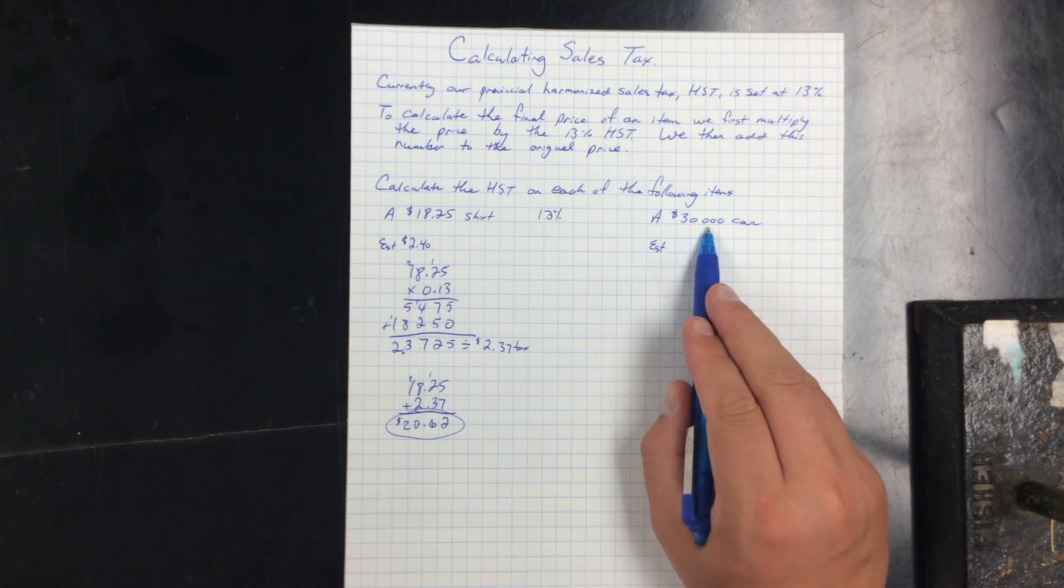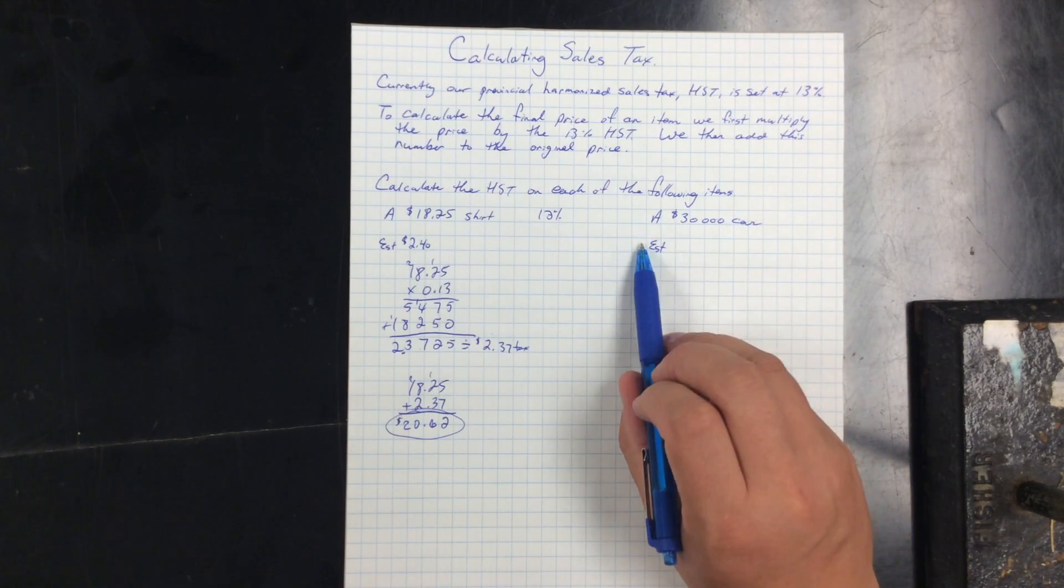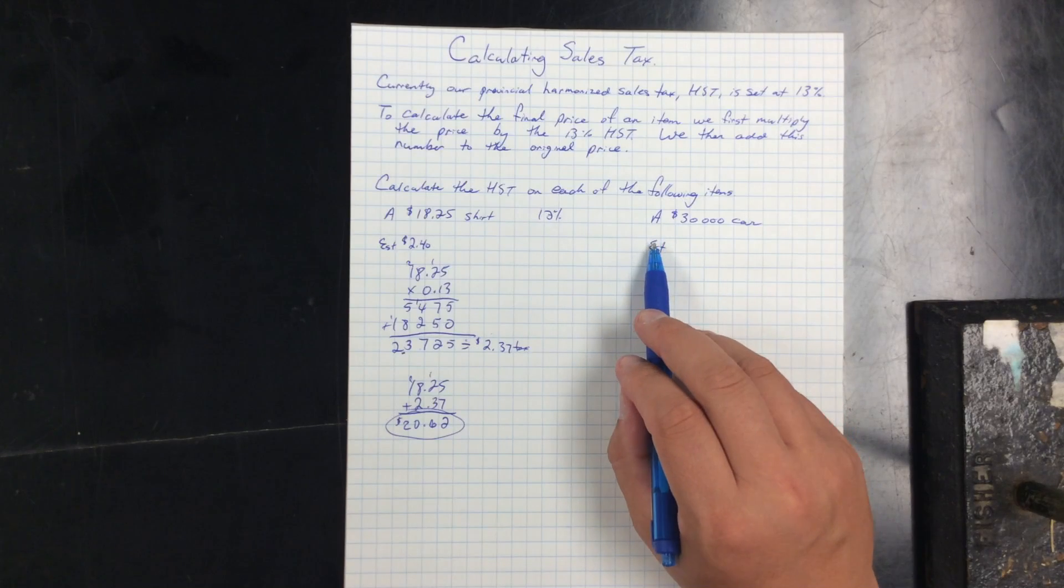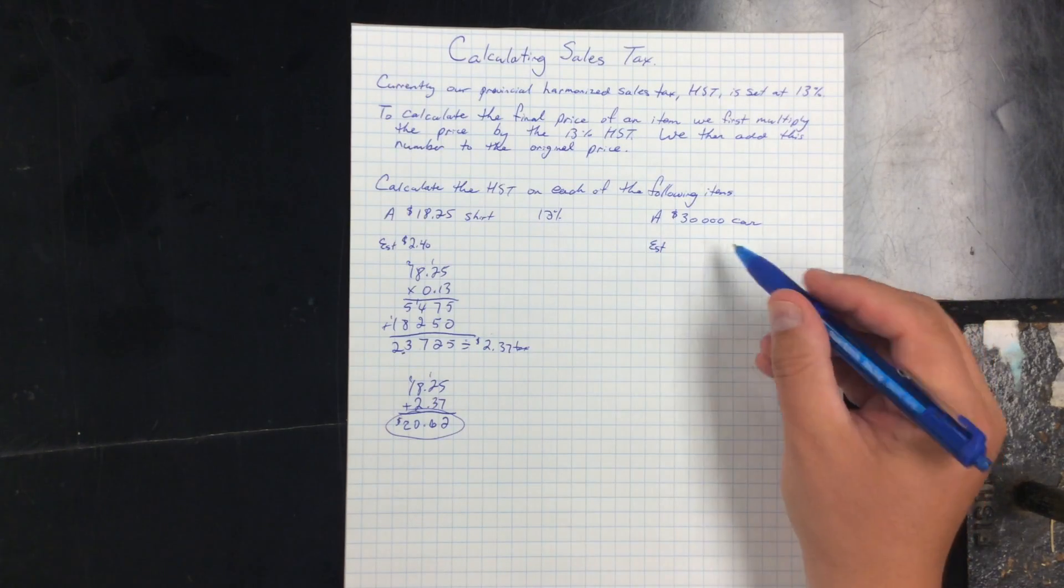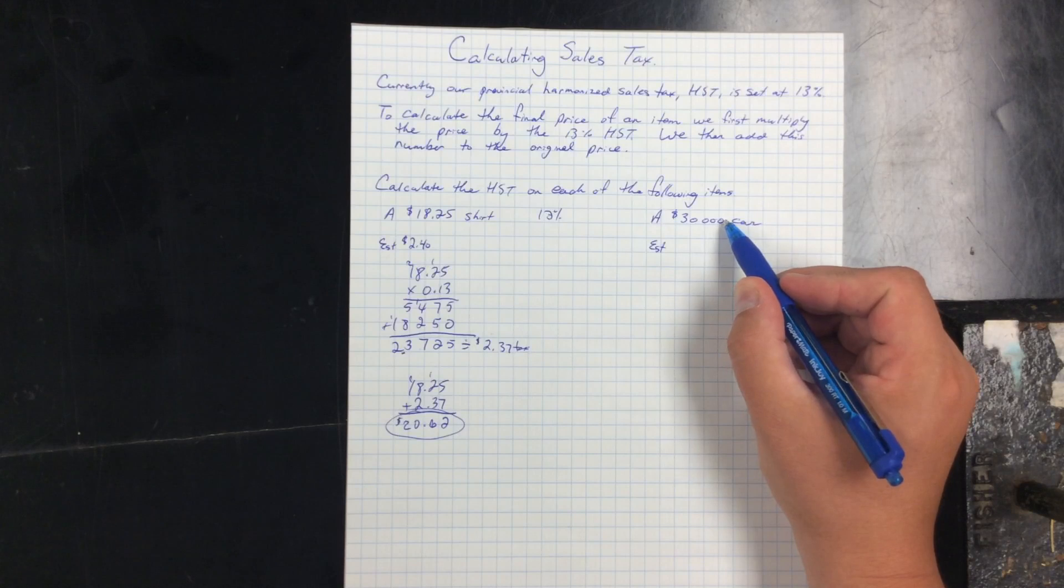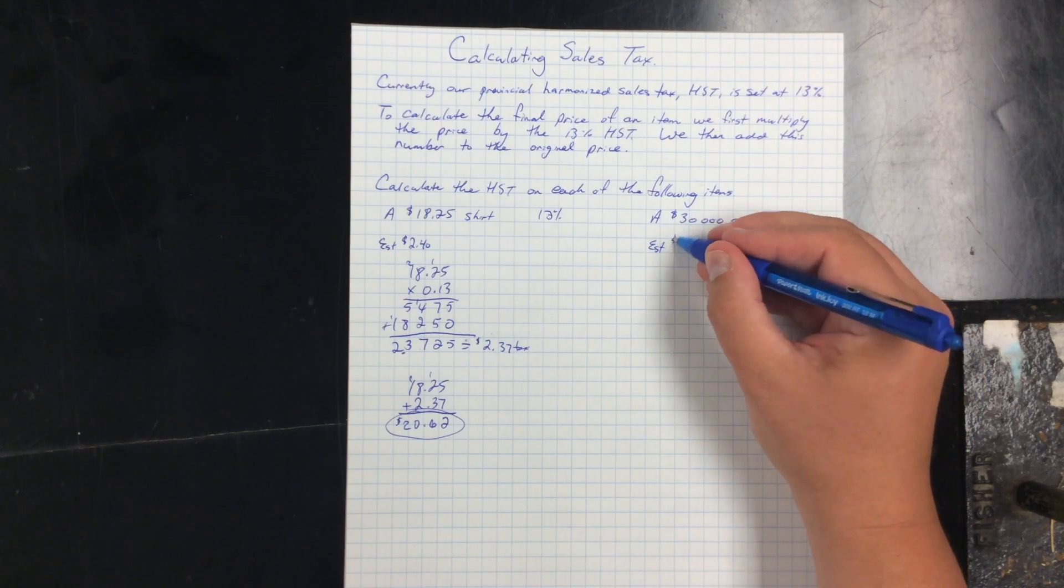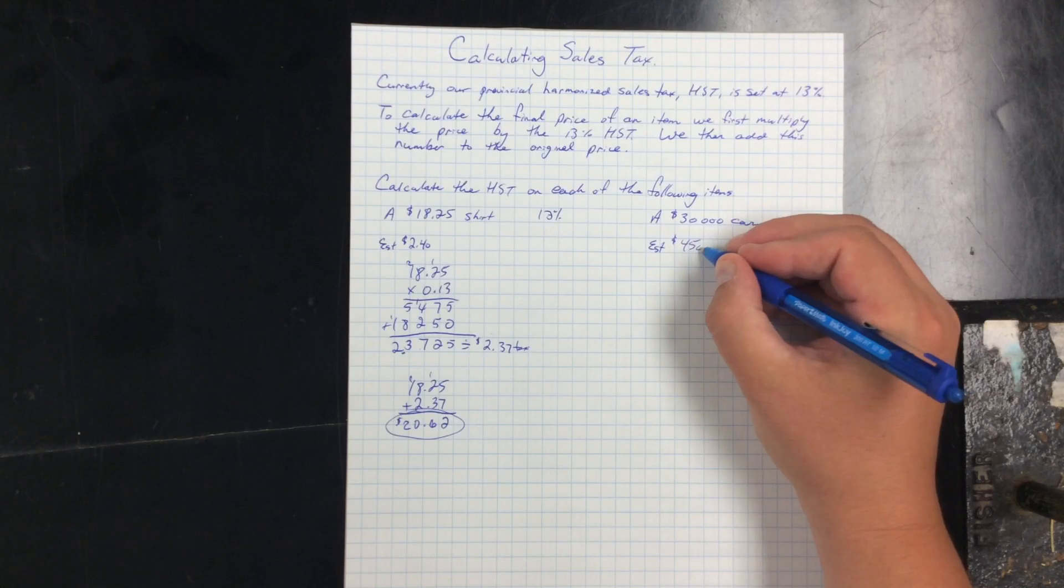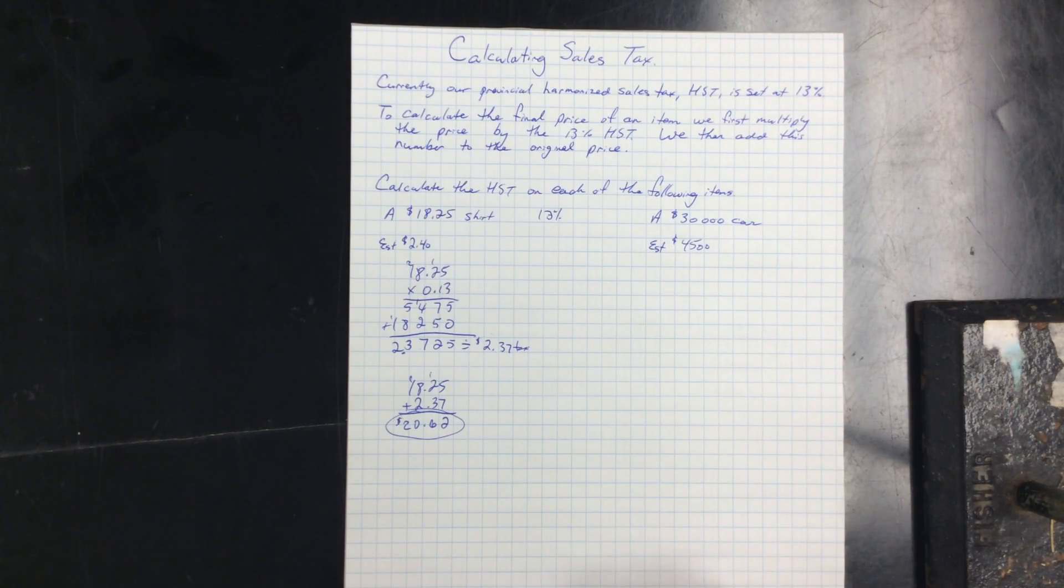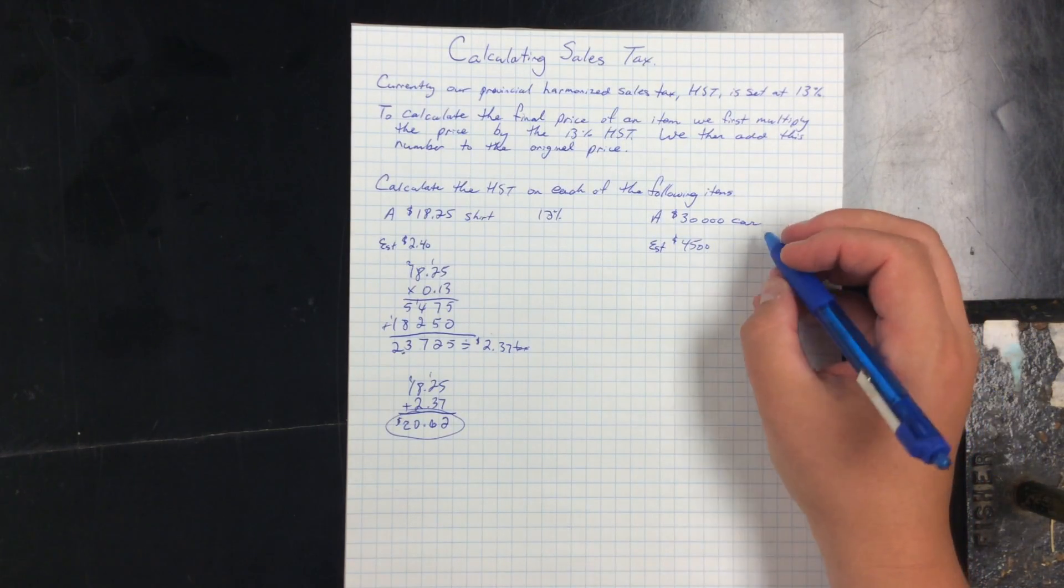Alright, a little bit bigger number. I'm buying a $30,000 car and I want to find out how much tax is going to be on that. 10% of $30,000 would be $3,000 and half of that again, to get me up to 15%, would be another $1,500. So I'm going to add $3,000 to $1,500 to get an estimate of $4,500 in tax.